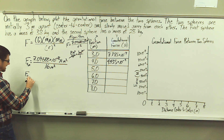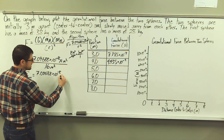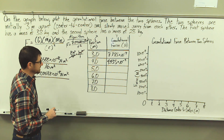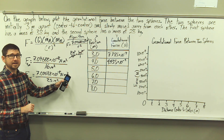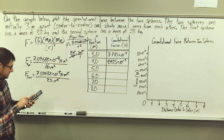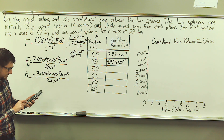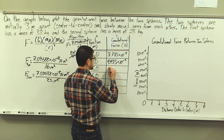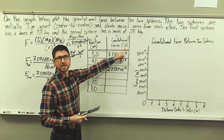Force of gravitational attraction at five meters: 7.09688 times 10 to the negative 8th newton meters squared divided by five meters squared, which gives us 25 meters squared. The meters squared in the numerator and denominator cancel. Dividing by 25 meters squared gives us 2.8387 times 10 to the negative ninth newtons.